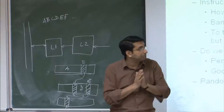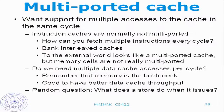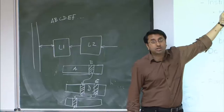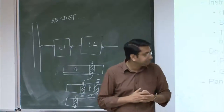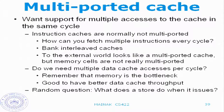A banked interleaved cache gives you some benefit but not full freedom. For example, if you want to access two cache blocks falling on the same bank, that will not be allowed — whereas it would be allowed in a true dual-ported cache. To the external world, a banked interleaved cache more or less looks like a multi-ported cache, but the memory cells are actually single-ported. You get some amount of concurrency, but not full concurrency. Data caches are normally dual-ported — at most dual-ported, they do not normally have more than two ports.